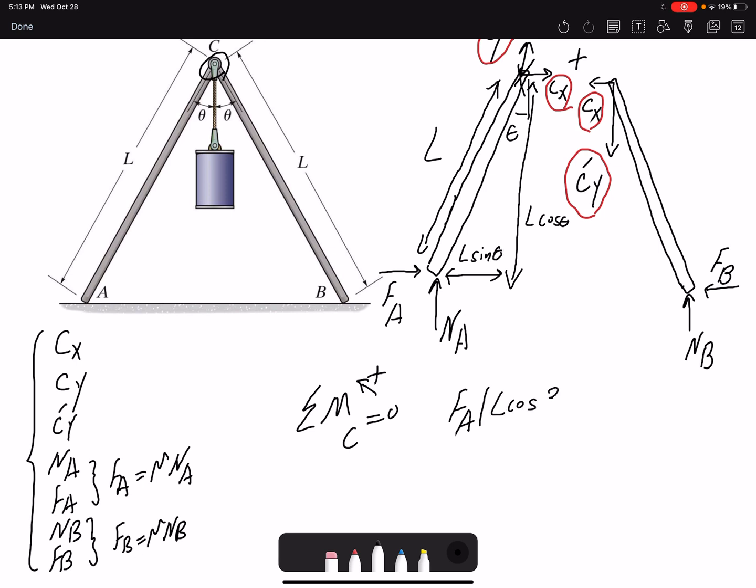So L cosine 30 here, FA times L cosine 30 minus NA times L sine 30 equals zero.